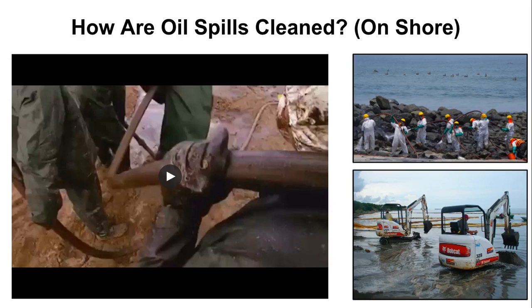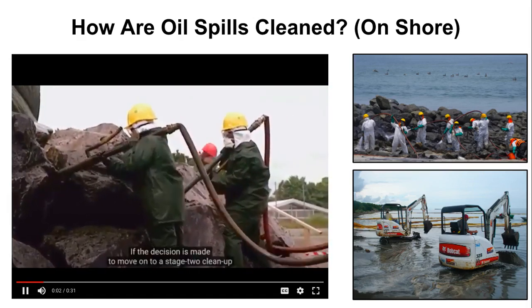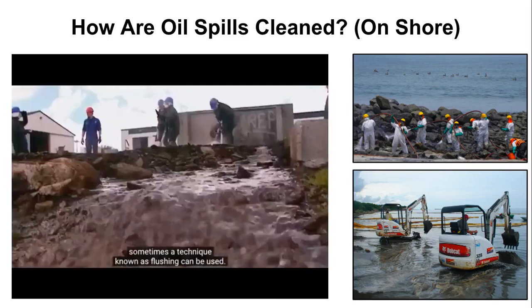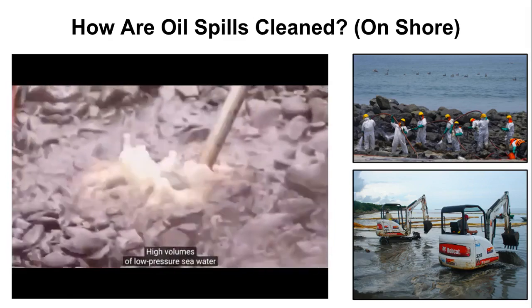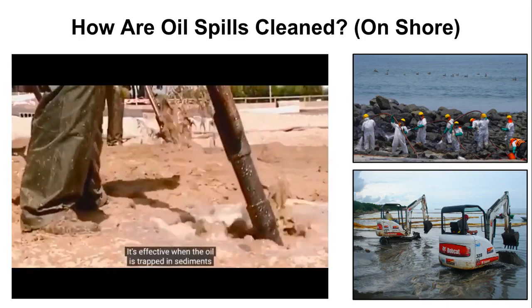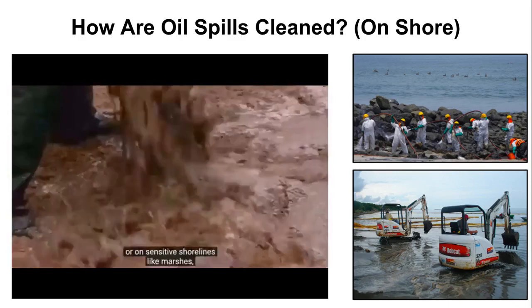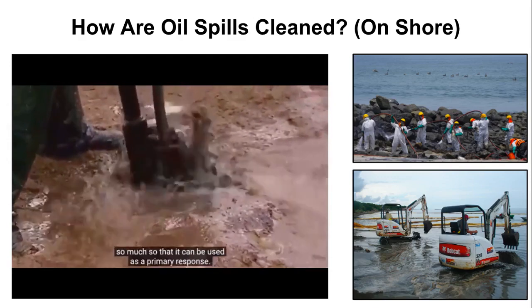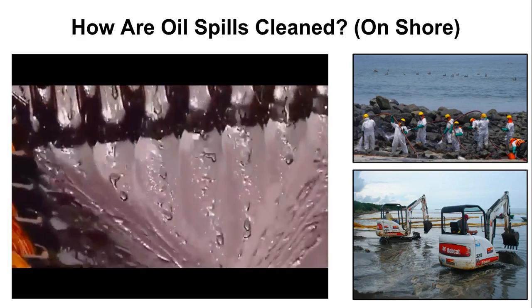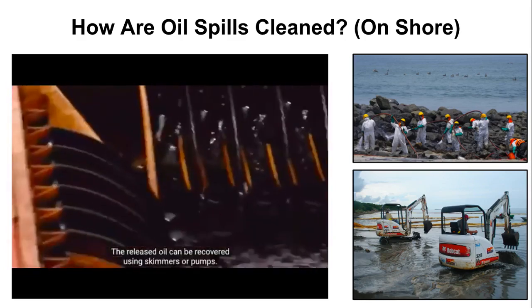Manual removal is an excellent method when heavy machinery cannot reach an oiled shore. Clean-up crews use shovels or other hand tools to pick up oil from the shoreline. If the decision is made to move on to a stage 2 clean-up and remove the remaining oil, sometimes a technique known as flushing can be used. High volumes of low-pressure seawater are directed onto the upper shore. It's particularly effective when the oil is trapped in sediments or on sensitive shorelines like marshes. The released oil can be recovered using skimmers or pumps.